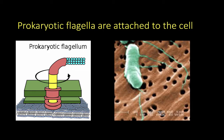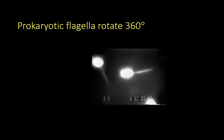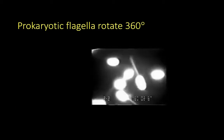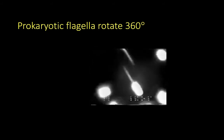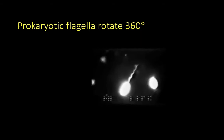One way to think about prokaryotic flagella is as flexible straws attached to a rotor embedded in the membrane via a bent adapter. The rings of the basal body rotate in the membrane, and the movement is transferred via the hook to the flagella, which rotate 360 degrees. If the rotor turns counterclockwise, the flagella causes the prokaryote to swim in a straight line. If the rotor turns clockwise, the prokaryote tumbles and changes direction.